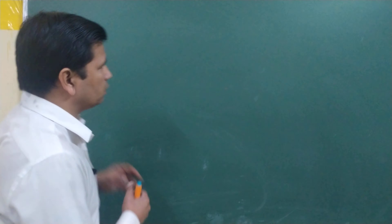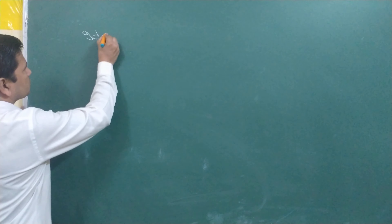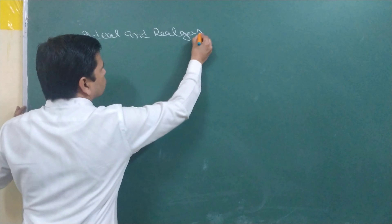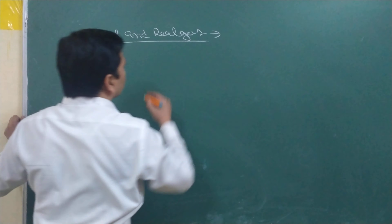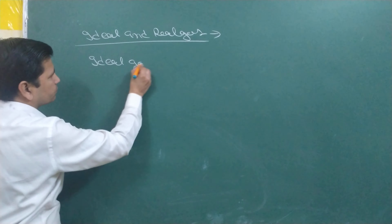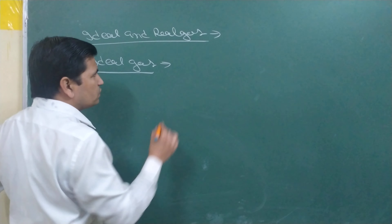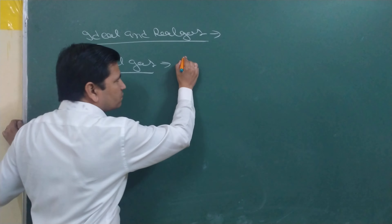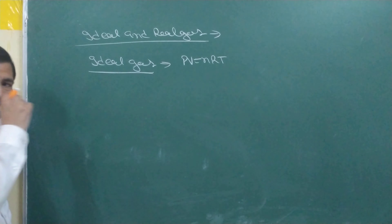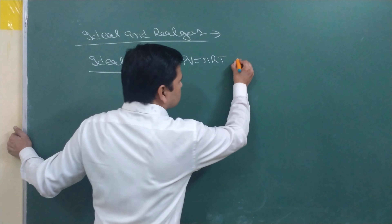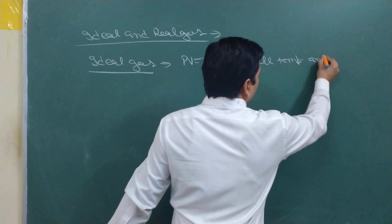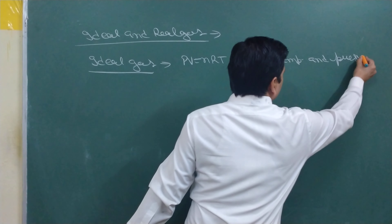Students, today we will continue with ideal gas and real gas. So first, what is the definition of ideal and real gas? Any gas which follows the ideal gas equation PV = nRT at all temperatures and pressures is known as ideal gas.